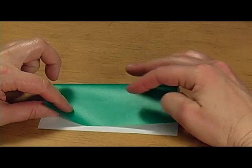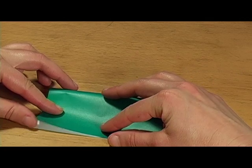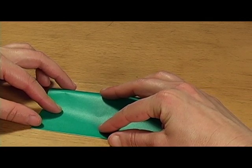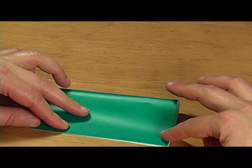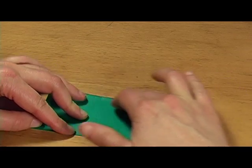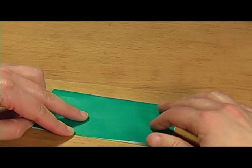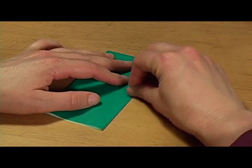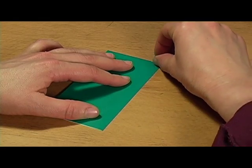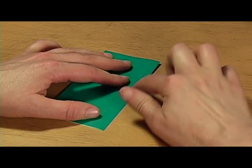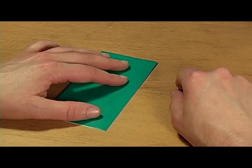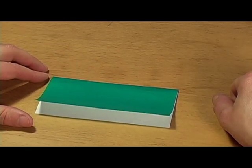Fold it in half. It's going to help you later if you try to line it up as carefully as possible so the edges are even, and whenever you make a fold really make the crease as sharp and flat as you can. That's the first fold.